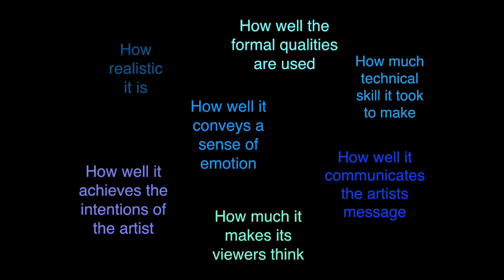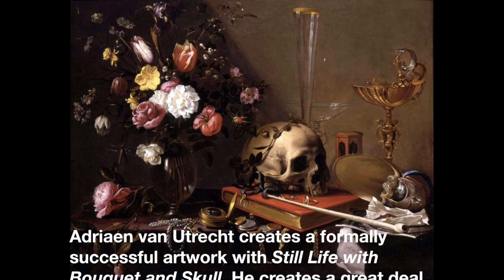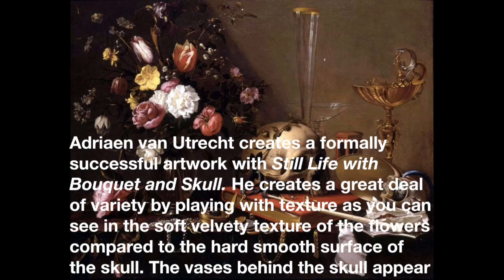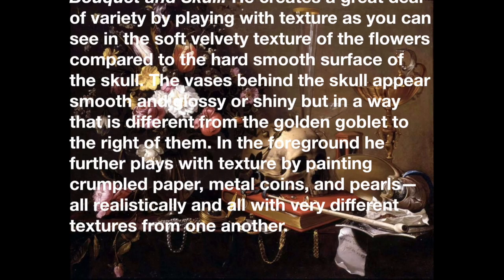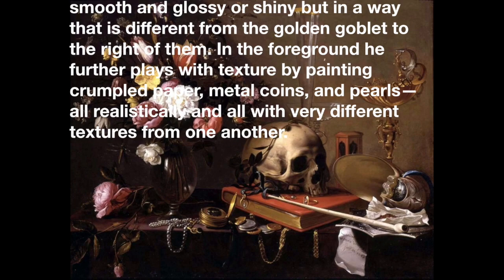Adrian Van Utrecht creates a formally successful artwork with Still Life with Bouquet and Skull. He creates a great deal of variety by playing with texture, as you can see in the soft, velvety texture of the flowers compared to the hard, smooth surface of the skull. The vases behind the skull appear smooth and glossy, different from the golden goblet to their right. In the foreground, he further plays with texture by painting crumpled paper, metal coins, and pearls — all realistically and all with very different textures from one another.